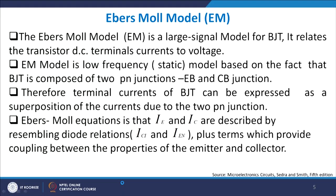An important terminology in bipolar technology is the Ebers-Moll model, also referred to as the EMM or EM model. Proposed by scientists Ebers and Moll, it is a large signal model for BJT — unlike the T and Pi small signal models. It is a low frequency model that treats BJT as a two-junction device: the emitter-base (EB) junction and the collector-base (CB) junction.